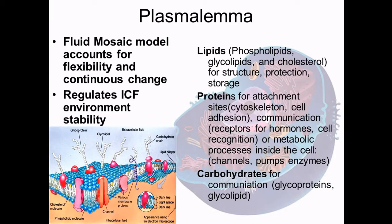The plasma membrane follows the fluid mosaic model — it's fluid, it moves constantly, and it's always changing. Receptors on the surface of your cell now won't be the same receptors there five minutes from now; they're constantly being degraded and replaced. If you affect the lipids, proteins, or carbohydrates in the membrane, it changes the membrane's function. For example, cholesterol is important for fluidity in this membrane, but too much cholesterol can get sticky and slow down the transport of things like oxygen and CO2 across the membrane.